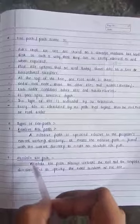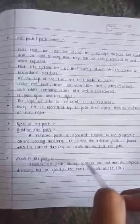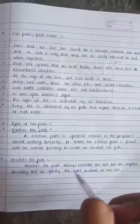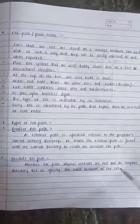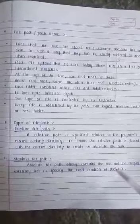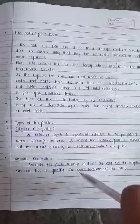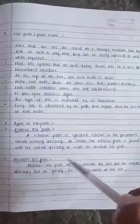What is absolute file path? Second type: absolute file path always contains the root and the complete directory list to specify the exact location of the file. In the next video we will see the example specifying the relative file path and absolute file path. Thank you.